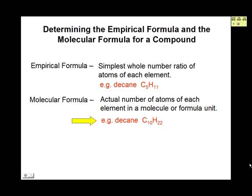The coefficients in the molecular formula are the same as those in an empirical formula, but multiplied by a whole number factor. In this case, the factor is 2: 2 times 5 is 10, and 2 times 11 is 22.